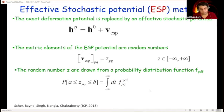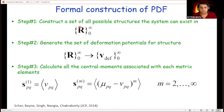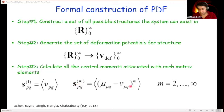The random numbers are drawn from a probability distribution function (PDF) — these are not uniform random numbers and not white noise; it is the complete opposite. The PDF has a very specific distribution. By carefully choosing this probability distribution function I can recreate the ensemble properties of a collection of structures. This is done through a formal construction. Step one: construct the set of all possible structures the system can exist in. Step two: generate the set of deformed potentials for those structures. Then calculate all the moments associated with each matrix element of those deformation potentials.